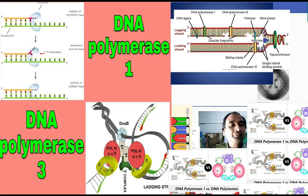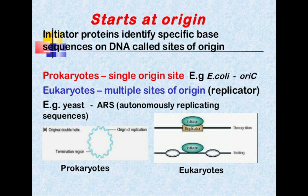We are studying chapter number 20 of the second year biology. Today's topic is the replication process. DNA replication begins at one or more sites on the DNA molecule where there is a specific sequence of nucleotides. DNA polymerase 3 and other enzymes begin a complex process that catalyzes the addition of nucleotides to the growing complementary strand of the DNA.